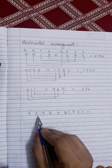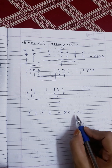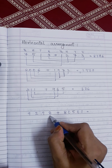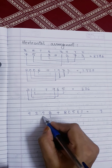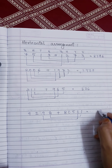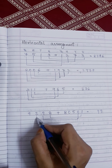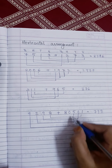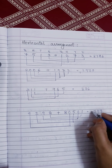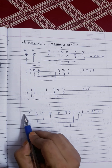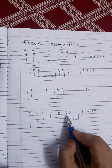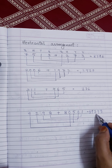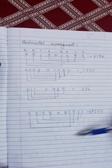Next number: nine thousand two hundred and ninety-eight and eighty thousand five hundred and one. This is the four-digit number and this is the five-digit number. We add unit to unit: eight plus one is nine. Ten to ten: nine plus zero is nine. Hundred to hundred: two plus five is seven. Thousand to thousand: nine plus zero is nine. There is no number at the ten-thousandths place and here the number is eight at the ten-thousandths place, so we write eight as it is. The number is eighty-nine thousand seven hundred and ninety-nine. This is the horizontal arrangement.